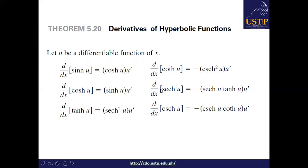What you need to memorize and familiarize is: sinh(u) → cosh(u) · u prime; cosh(u) → sinh(u) · u prime; tanh(u) → sech²(u) · u prime; coth(u) → negative csch²(u) · u prime; sech(u) → negative sech(u) · tanh(u) · u prime; csch(u) → negative csch(u) · coth(u) · u prime.